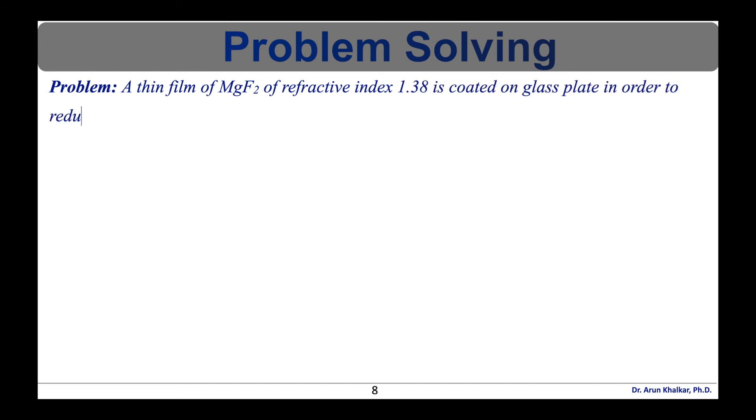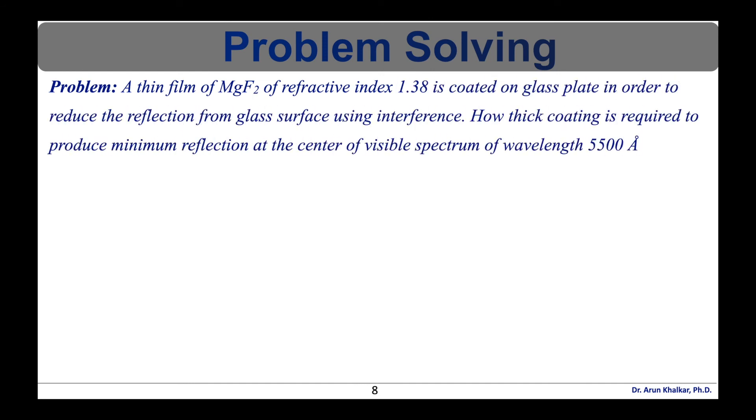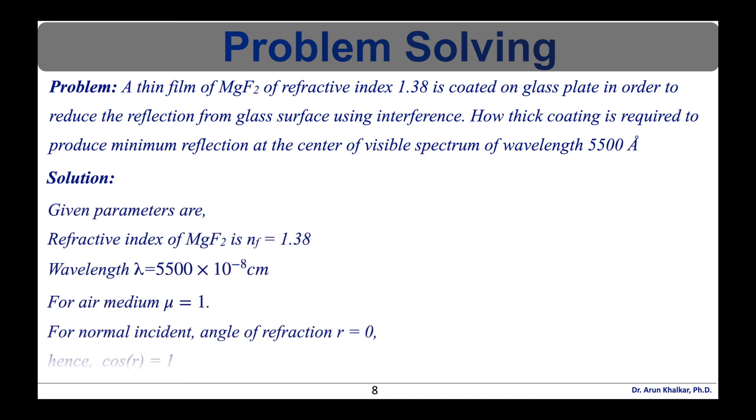Now let's discuss about the problem solving based on anti-reflection coating. Problem is a thin film of magnesium difluoride of refractive index 1.38 is coated on glass plate in order to reduce the reflection from glass surface using interference. How thick coating is required to produce minimum reflection at the center of visible spectrum of wavelength 5500 angstrom unit.